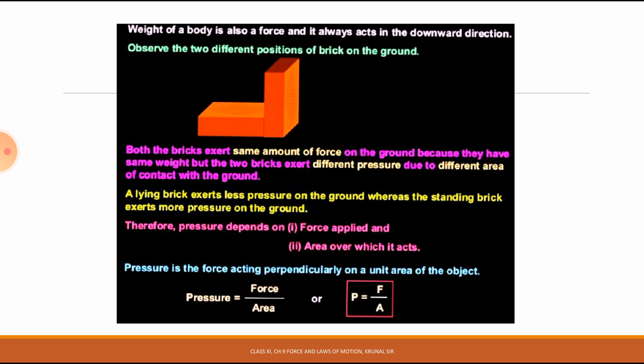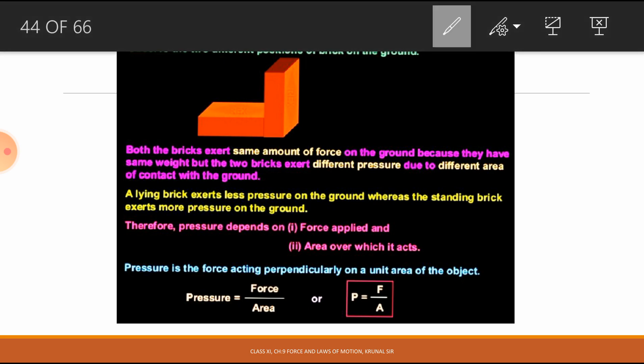A lying brick exerts less pressure on the ground, whereas a standing brick exerts more pressure on the ground. Therefore, pressure depends on two things: first, the force applied, and second, the area over which it acts. Pressure is the force acting perpendicular on a unit area of an object — this is the definition of pressure.